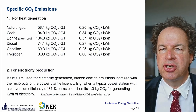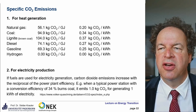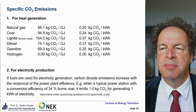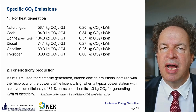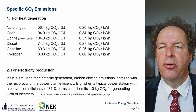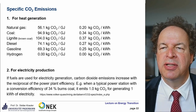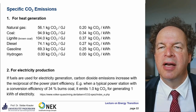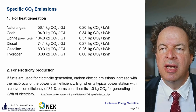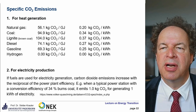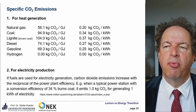We also have to consider CO2 emissions. Thinking only about heat generation first, for electricity generation we multiply by the conversion efficiency. Natural gas emits 56.1 kg CO2/GJ of heat released, or equivalently 200 g CO2/kWh. Coal is significantly higher at 94.9 kg CO2/GJ. Lignite is even higher at 104 kg CO2/GJ. Diesel and gasoline are a bit lower. Hydrogen produces no CO2 — it only emits water vapor.